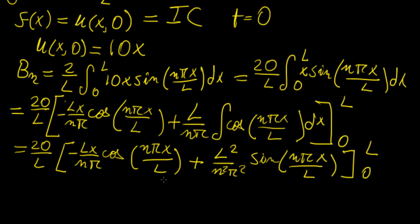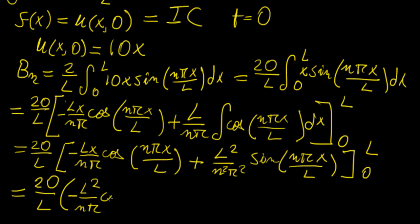Now we put the values in to find an explicit form for this Fourier coefficient. Putting l in first: we get l² over nπ, and then cosine of nπ. The sine of nπ equals zero for any integer multiples of π, so that whole term is zero. When we put 0 in, those terms cancel too, giving zero. So we're left with the contribution from the cosine term only.